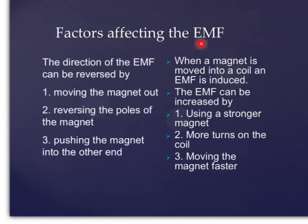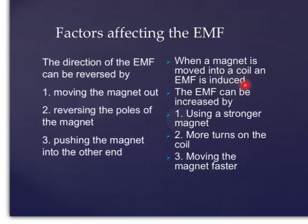Factors affecting the induced EMF. The direction of the EMF can be reversed by: firstly, moving the magnet out; secondly, reversing the poles of the magnet; thirdly, pushing the magnet into the other end of the coil. When the magnet is moved into the coil, an EMF is induced. The EMF can be increased by using a stronger magnet, or more turns on the coil, or moving the magnet faster.